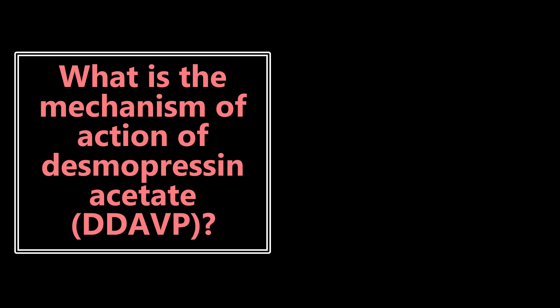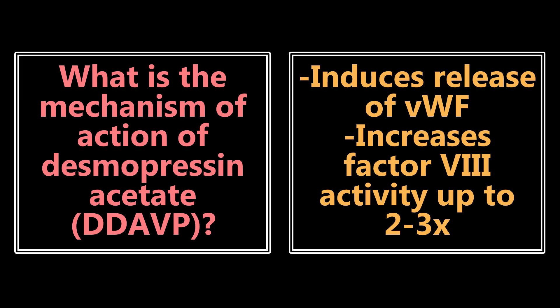What is the mechanism of action of desmopressin acetate, or DDAVP? There are two important things: it's going to induce the release of von Willebrand factor, and it's going to increase factor VIII activity by up to two to three times. An important indication for DDAVP is end-stage renal disease patients with bleeding, because their uremic platelets are dysfunctional. So definitely know the mechanism and application for DDAVP.